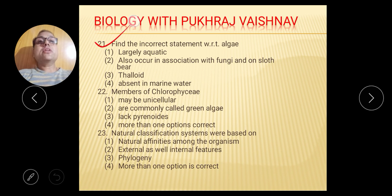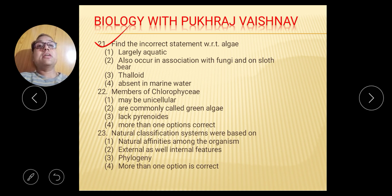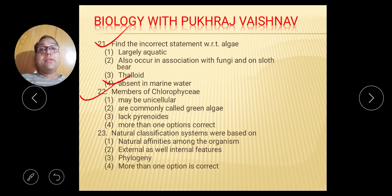Question number 21: Find the incorrect statement with respect to algae — largely aquatic, correct. Also associated with fungi, correct. Absent in marine water — no, there is red algae and brown algae in marine water. So this is the incorrect statement. Question 22: Members of Chlorophyta may be unicellular, are commonly called green algae, and lack pyrenoids — no, pyrenoids are present. So the correct answer is two — more than one is correct.